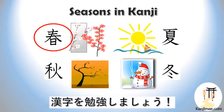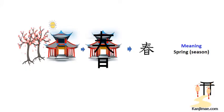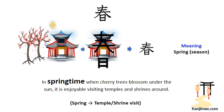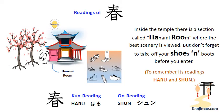First, as you may guess from the picture, spring. In this picture, a temple or shrine, cherry trees and the sun are seen. Please look closely at the temple. Different floors and the slopes on both sides are noticeable. The reflection of the sun in front looks like the stairs to the temple. In springtime, when cherry trees blossom under the sun, it is enjoyable visiting temples and shrines around. So when we see this kanji figure, we can remember a temple or shrine visit in spring.